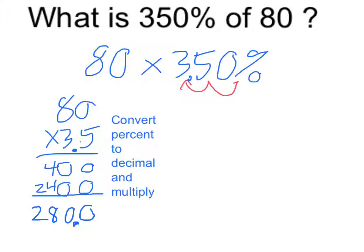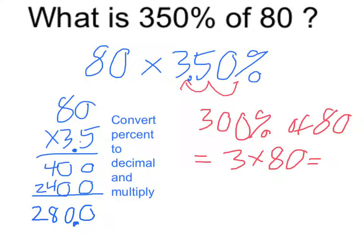But for something like this, I would probably do it mentally. I would think to myself, 300% of 80 is equal to 3 times 8, which is equal to 240. So 300% of 80 is 240.